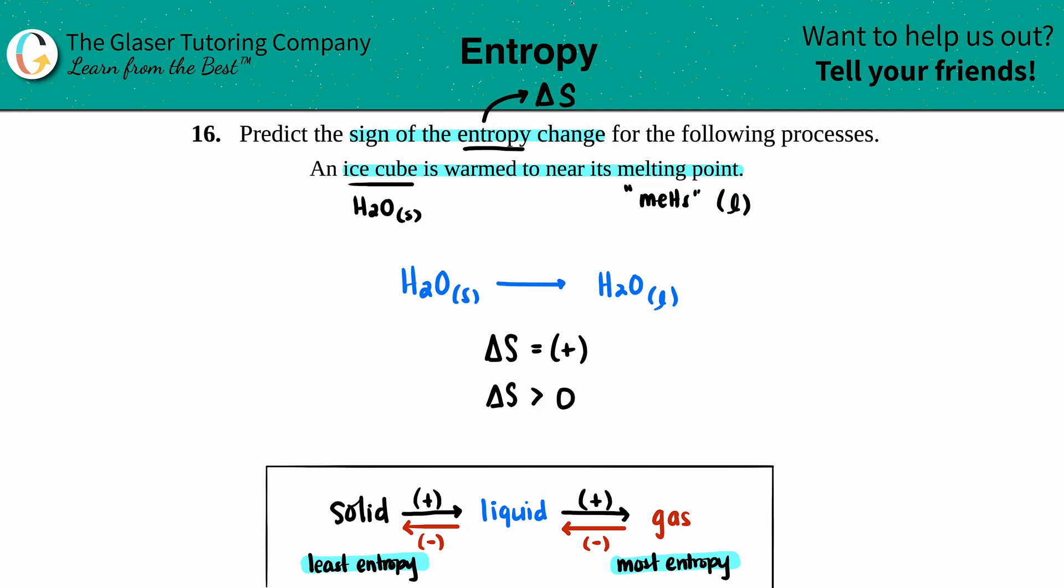They both are the same exact answer, right? Because anything greater than zero is a positive value. So that's the answer here. Since we're going from a solid to a liquid, the delta S has to be a positive value or just greater than zero. And that's it. Hopefully this helped. Let me know in the comments.